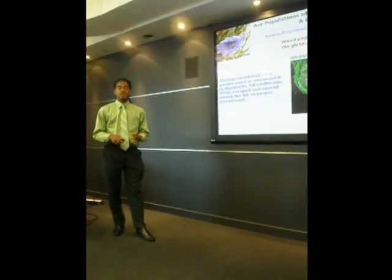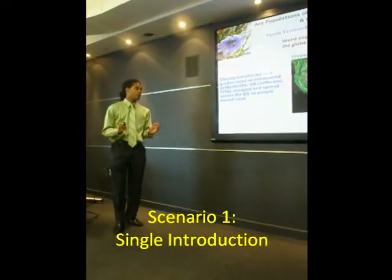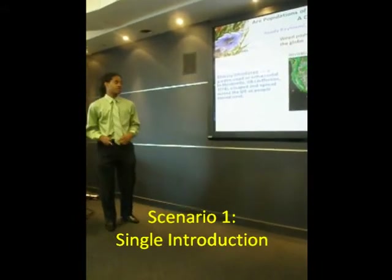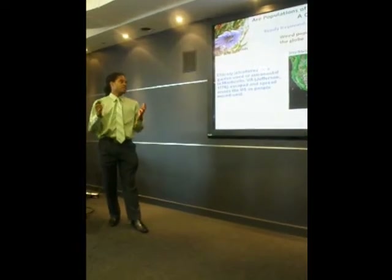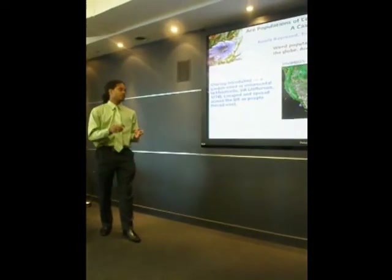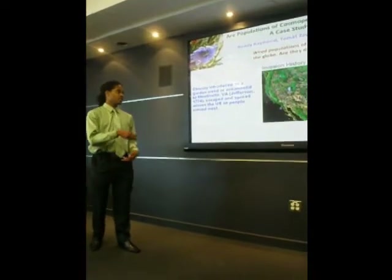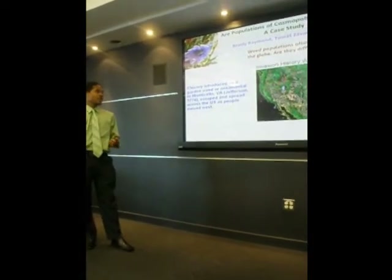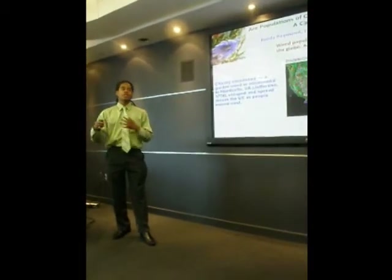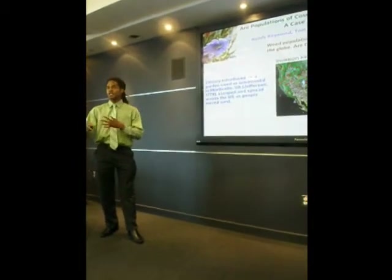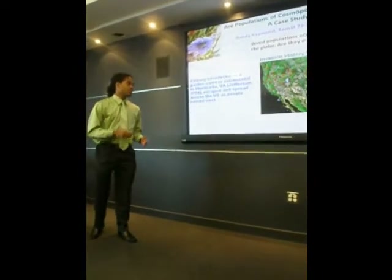We're going to focus on two scenarios. The first scenario is single introduction. In single introduction, the species is introduced into, say, Virginia and then spreads into neighboring populations — into New England and into the south — and slowly moves out west. In this scenario, populations neighboring one another would be expected to be genetically similar to each other.